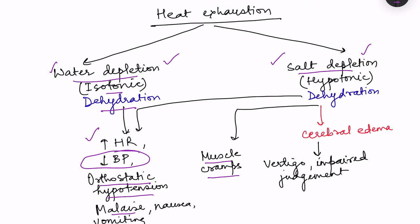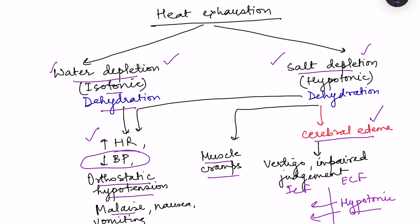Salt depletion heat exhaustion also has a high risk of cerebral edema. When extracellular fluid becomes hypotonic, water moves by osmosis from the hypotonic ECF into the hypertonic ICF — including into neurons — causing cerebral edema. This leads to neuronal signs and symptoms such as vertigo and impaired judgment. So in salt depletion heat exhaustion, CNS involvement is also seen.